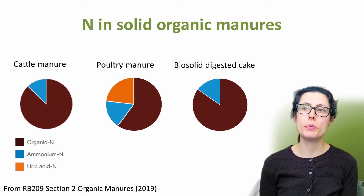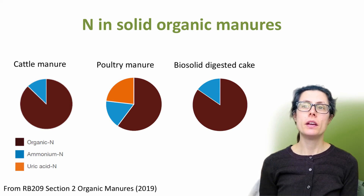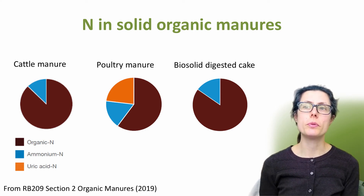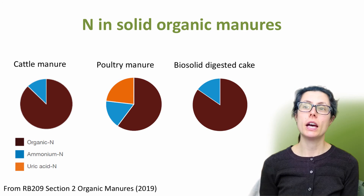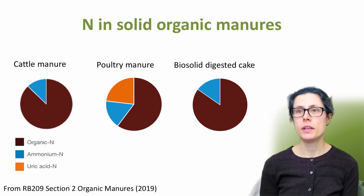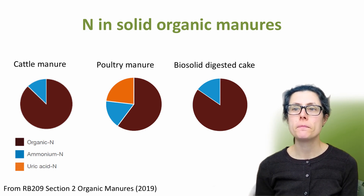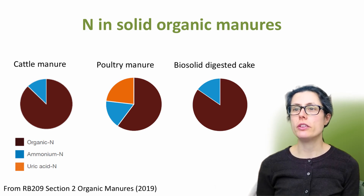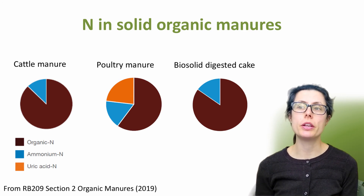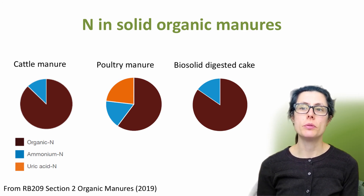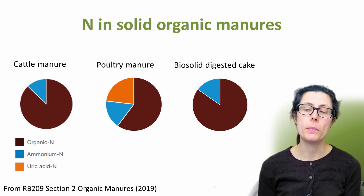This slide shows approximate proportions of nitrogen in three solid organic manures, again data from RB209. The cattle and poultry manure, plus biosolid digestate cake, also have a much larger portion of their total nitrogen in the form of organic nitrogen, shown in brown, as compared to the liquid shown on the last slide. So solid manures generally have lower portions of readily available nitrogen. Cattle manure on the left is generally 10 to 25% readily available nitrogen. Poultry manure in the middle is the only organic manure which also contains uric acid, which readily converts to ammonium, so is readily available.